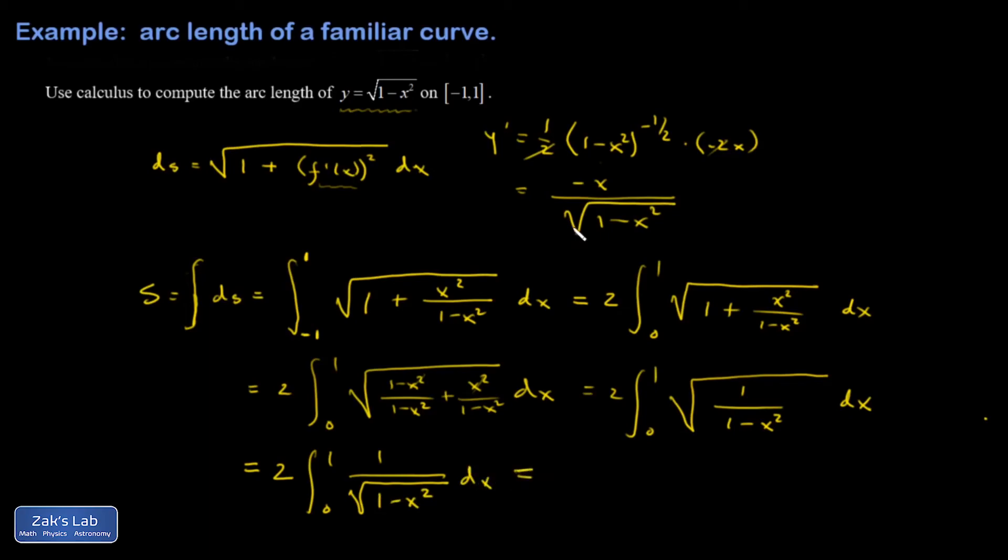You may recognize that as an inverse sine. So I end up with 2 times the angle whose sine is x evaluated from 0 to 1. All right, when I sub in the top limit, I have the angle whose sine is 1.